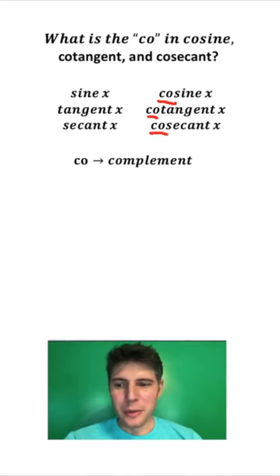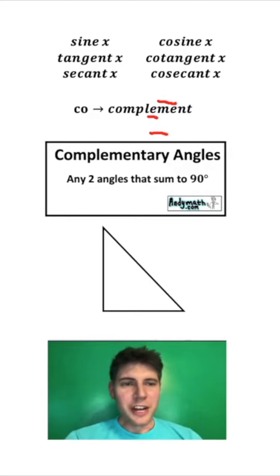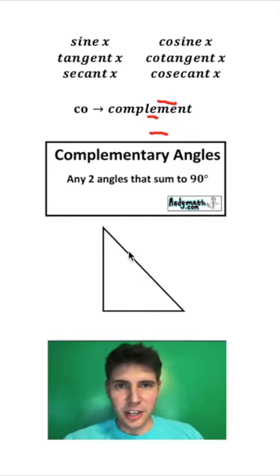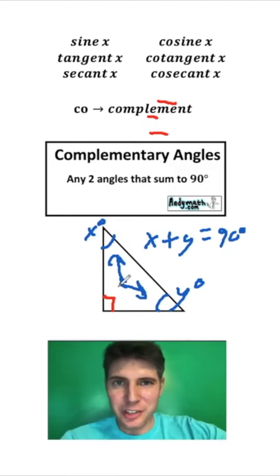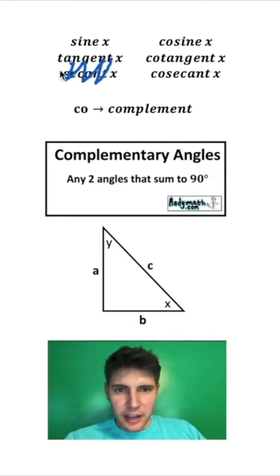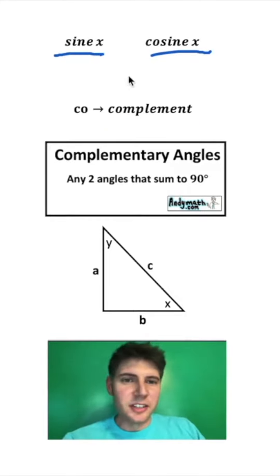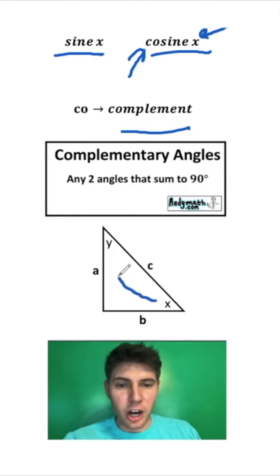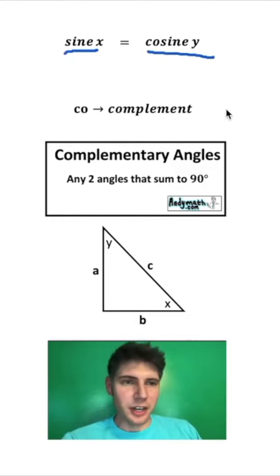In a right triangle, since all triangles have interior angles summing to 180, and this is a right triangle with one angle being 90 degrees, the remaining two angles have to add up to 90 — they are complementary angles. We'll label the angles x and y, and the sides a, b, and c. Looking at sine x and cosine x: because this is a cosine and we're talking about complementary angles, if we change this x to the complementary angle y, then these should be equal. So sine of x equals cosine of y.